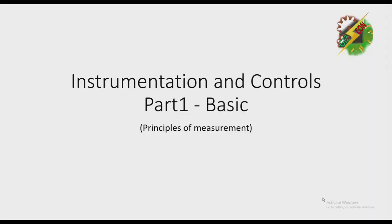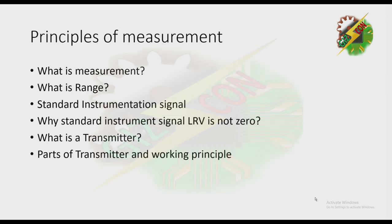Hello everyone, this is Andre again and now we're going to discuss Instrumentation and Controls Part 1, Basic. We're going to discuss: what is measurement, what is range, standard instrumentation signal, why the standard instrument signal lower range value is not zero, what is a transmitter, and the parts of a transmitter and working principle.